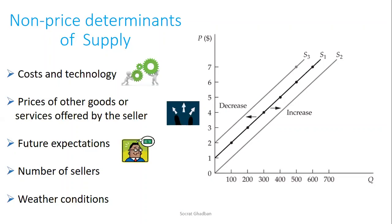Future expectations also affect supply — if a supplier knows that prices will increase in the future, they will decrease supply now and shift from S1 to S3. The fourth non-price determinant of supply is the number of sellers; whenever there are new suppliers or new entrants, supply will increase. Finally, weather conditions or crises can affect supply — for example, due to bad weather and scarcity of water, the production of tomatoes may decrease, causing S1 to shift to S3, meaning a decrease in supply.